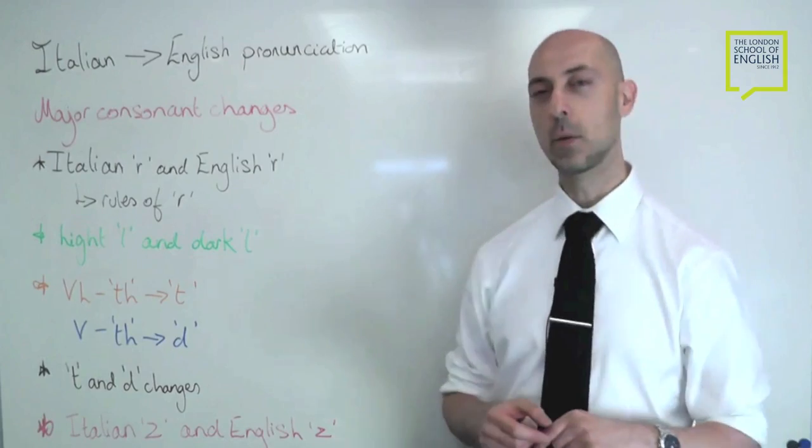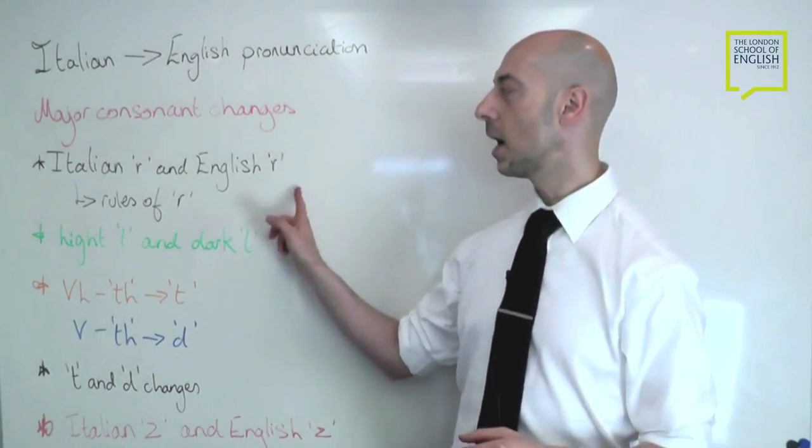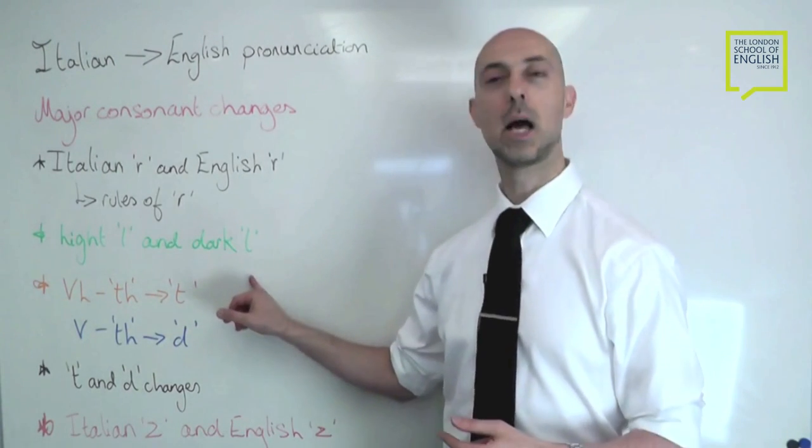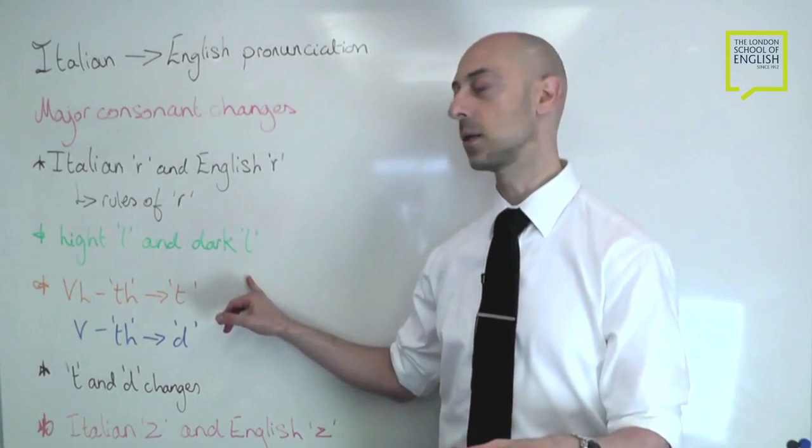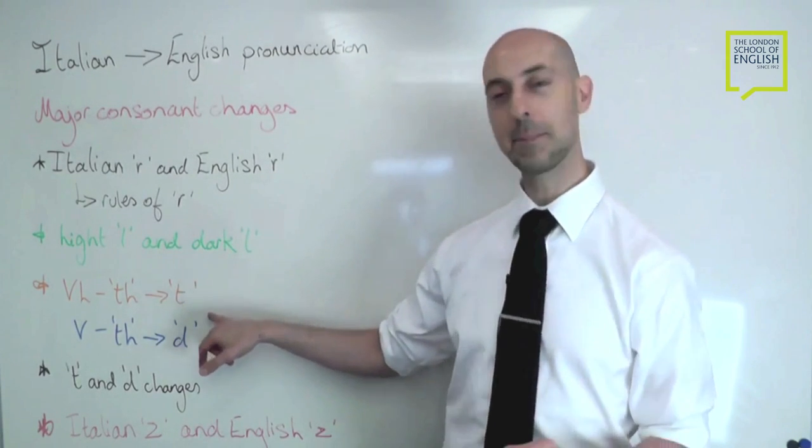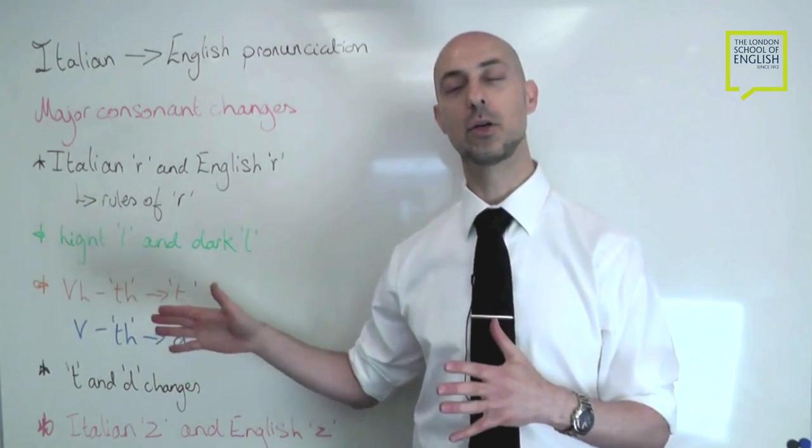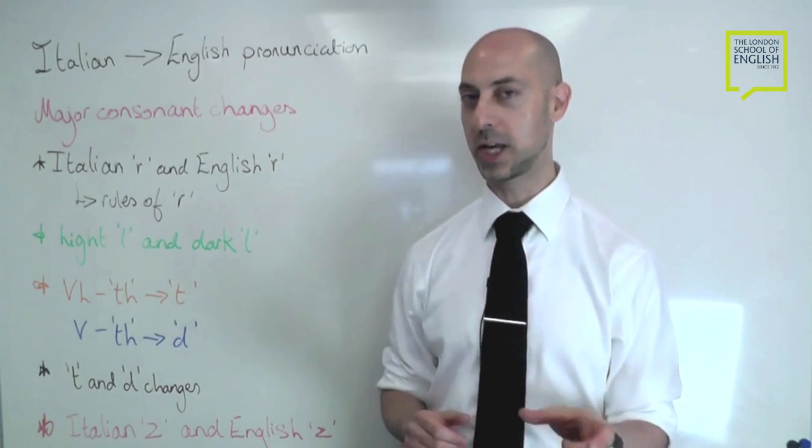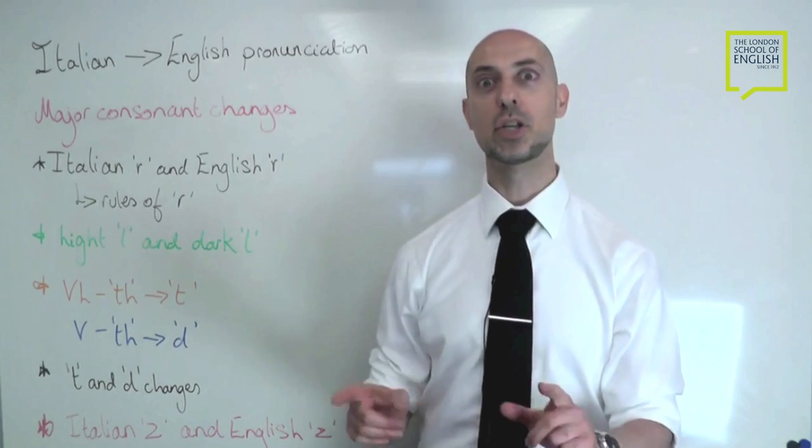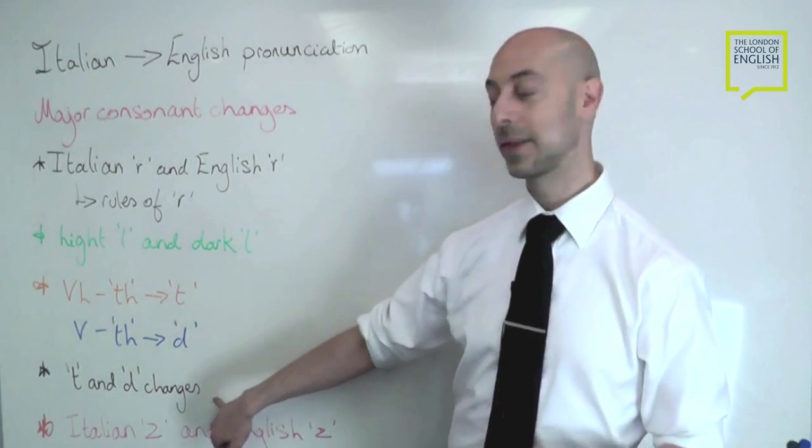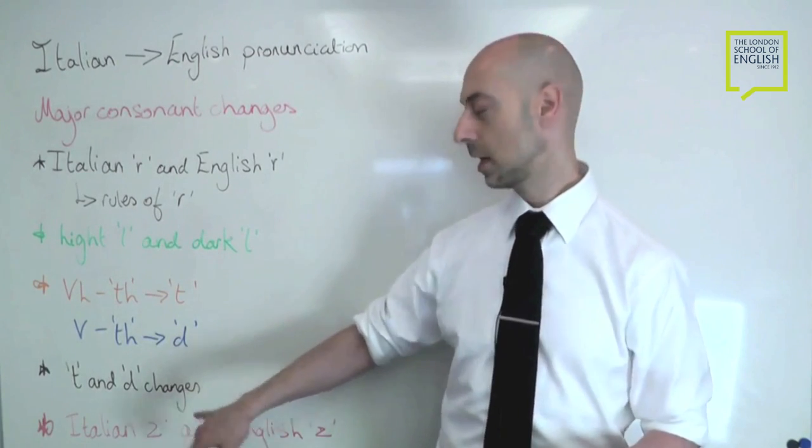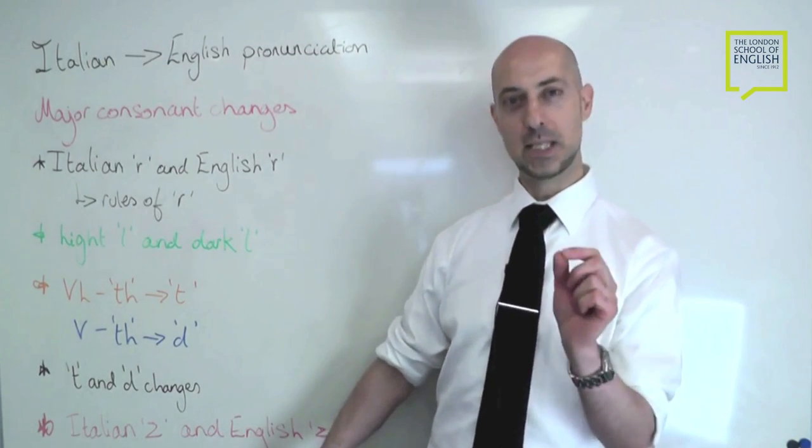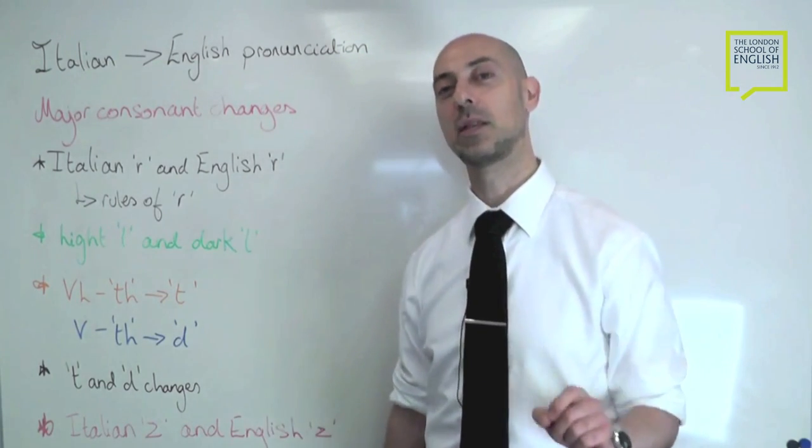So the things that we're going to look at today are the Italian R and the English R and the rules of the R in spoken English, the light L and the dark L and the differences that there are between those two. What happens when we may have a speaker who uses the voiceless sound and the voiced TH sound, what the changes can happen and what we need to do to make those changes clearer. We'll look also at the T and the D changes that happen within Italian, and we'll also look at the Italian Z and the English Z because there's a very specific and unique difference between those two.